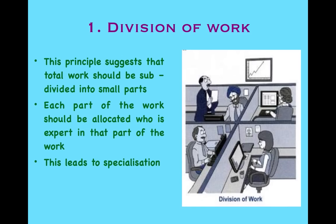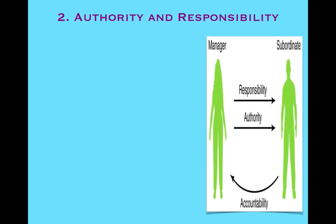Division of Work will also help in less wastage and will reduce the risk of work not being completed. Now let's see the second principle, which is Authority and Responsibility. Here in this picture, you can see that the manager is making the subordinate responsible as well as giving him some authority to do the work. It is very important to give authority along with responsibility, and the subordinate will be accountable to the manager.